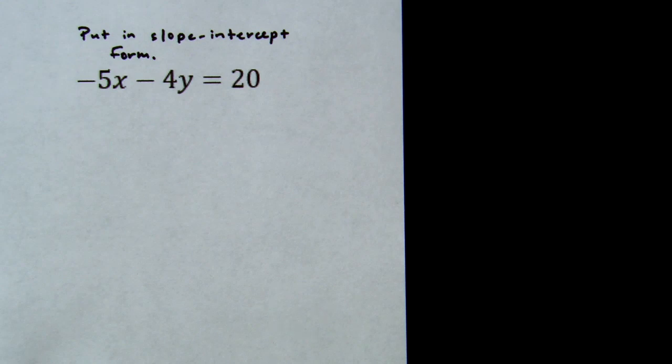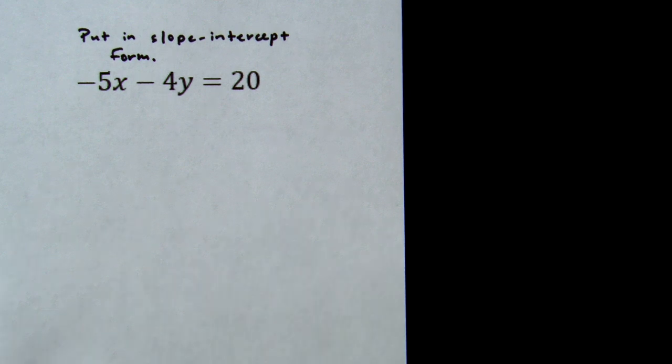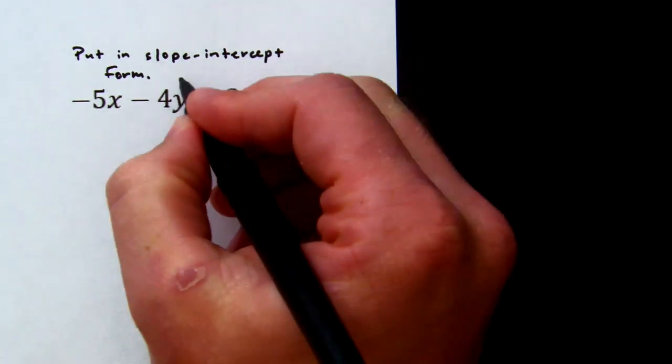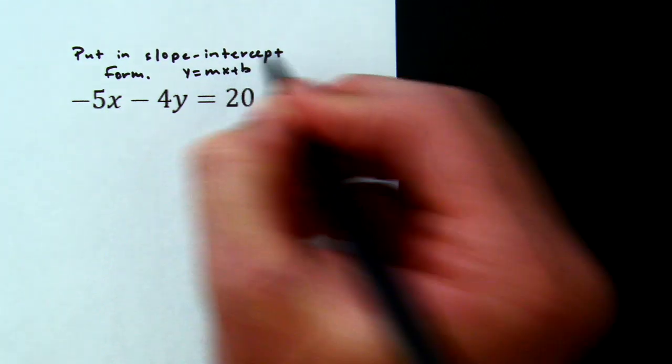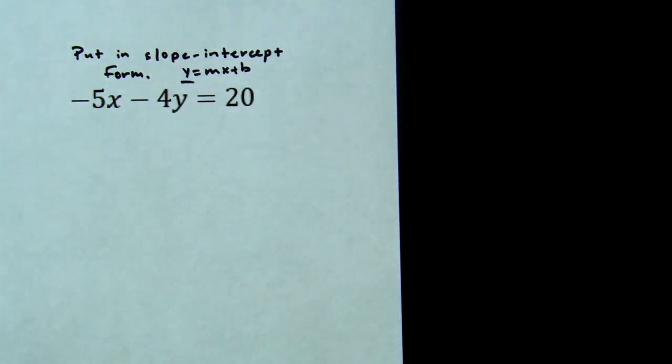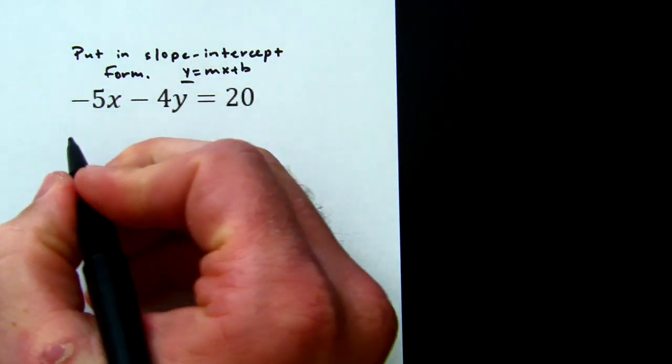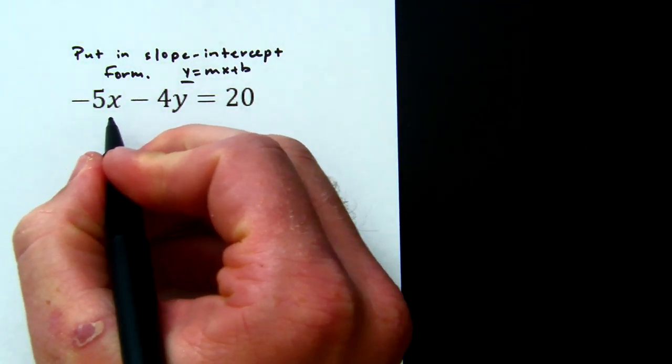So we need to put this equation, -5x - 4y = 20, in slope-intercept form. And remember, slope-intercept form is y = mx + b. So what we have to do is solve for y. We need to get this little guy by itself, and we do that by moving this -5x first.